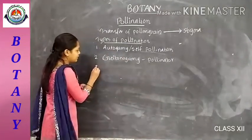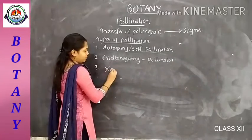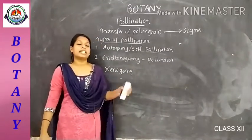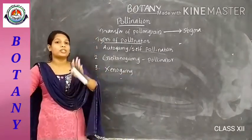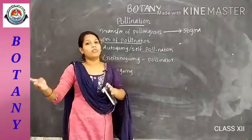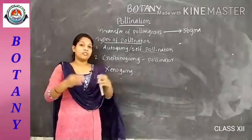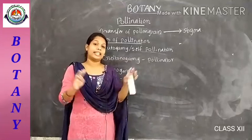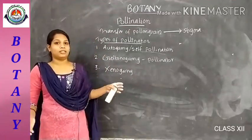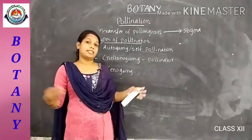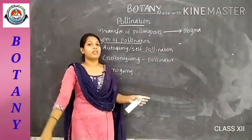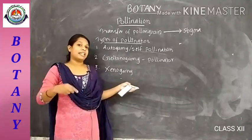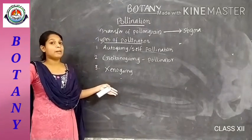The third type is xenogamy. In xenogamy, the pollen grains from the anther are transferred to the stigma of another flower of another plant. Pollination occurs between two different plants. The plants are genetically and morphologically different from each other, with no genetic similarity. Xenogamy is the transfer of pollen grain from the anther to the stigma of another flower of another plant.